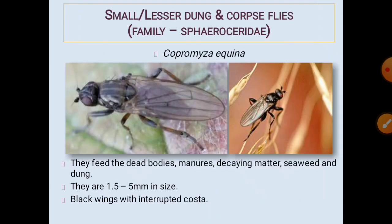Small or lesser dung and corpse flies from the family Sphaeroceridae, order Diptera: they feed on dead bodies, manures, decaying matter, seaweed, and dung. They are 1.5 to 5 mm in size, black-winged with an interrupted costa.